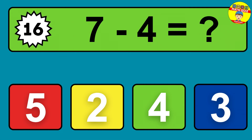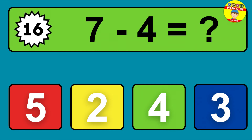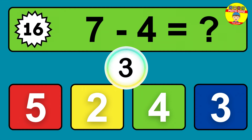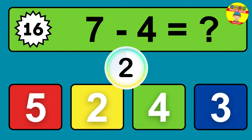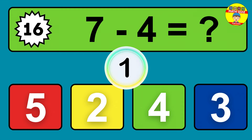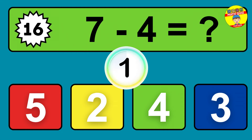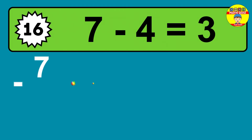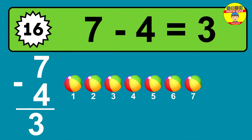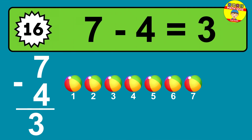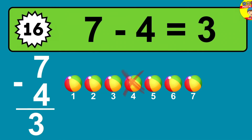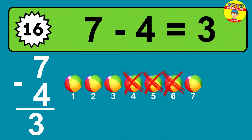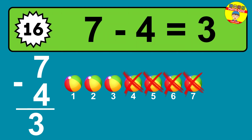Question sixteen: seven minus four equals what? The answer is seven minus four is three. Let's count it: one, two, three.